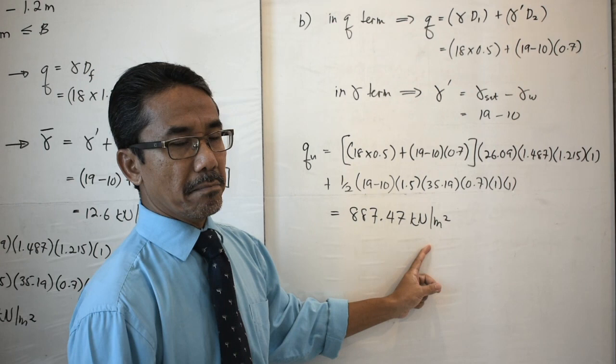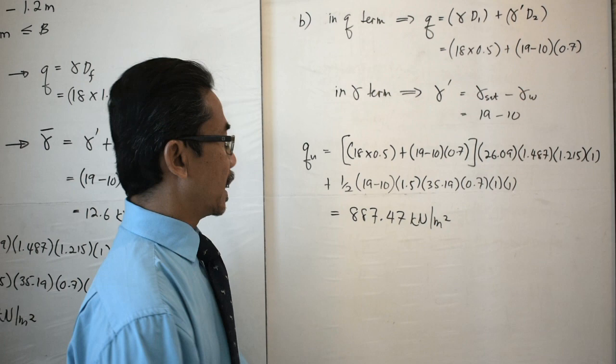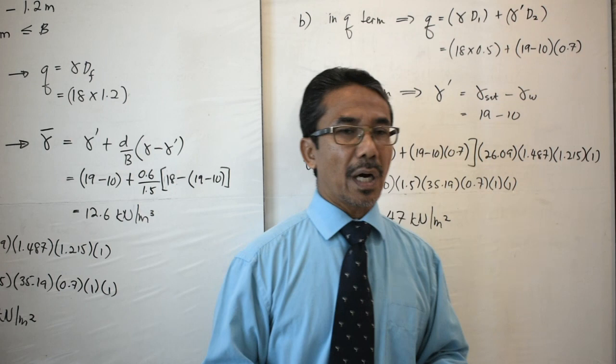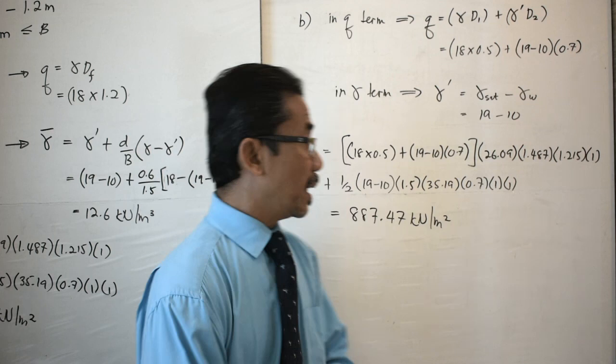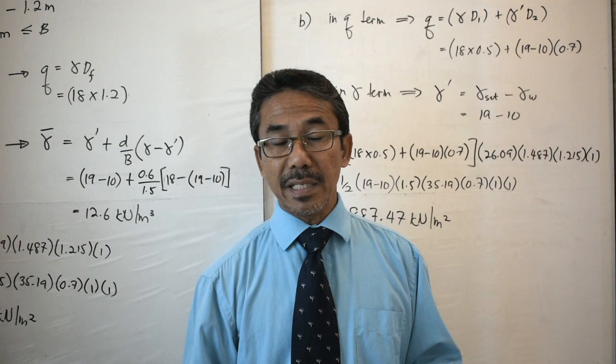This is the ultimate bearing capacity when the groundwater table is between the ground surface and the base of the footing. The same concept applies if you use Terzaghi's equation.